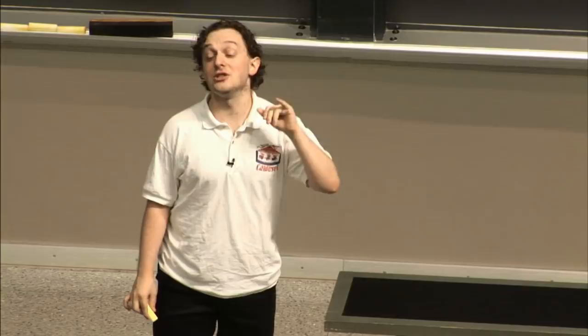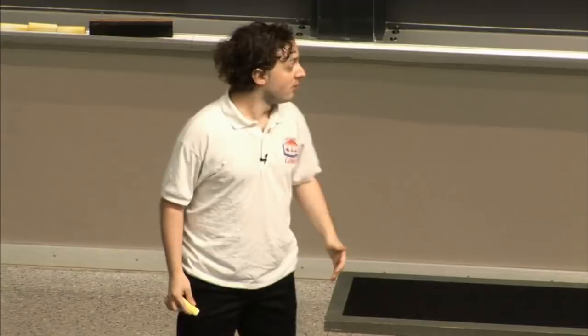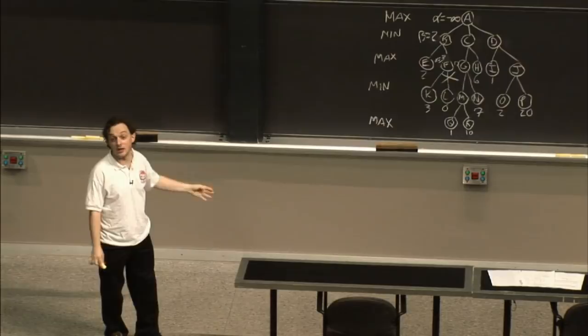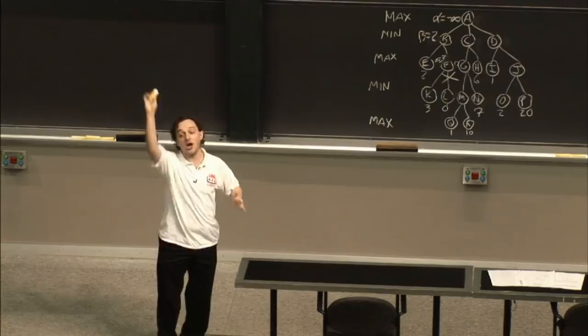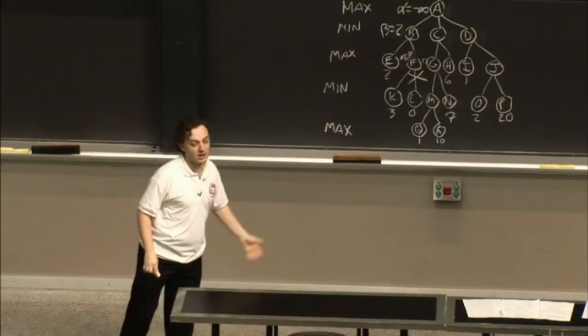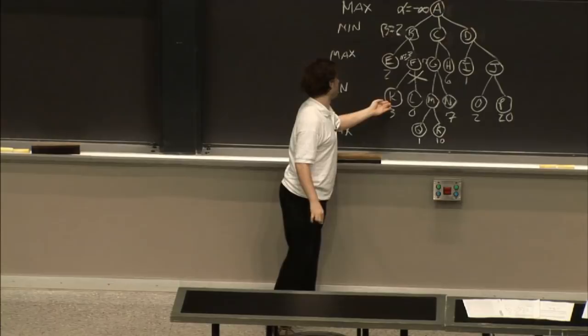Apply the sanity check to L with its value of 0. If L was negative infinity, the maximizer wouldn't touch it and would choose 3; the minimizer would take E. If L was positive infinity, the maximizer would love it, but the minimizer would still take E. No matter what was in L, the minimizer goes to E — so there's no reason to go down there. We can prune it right now.